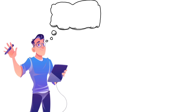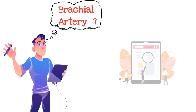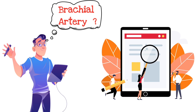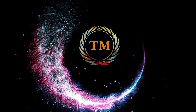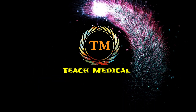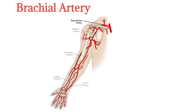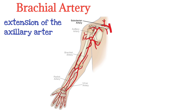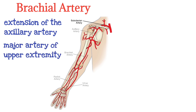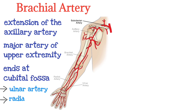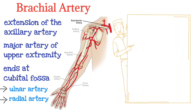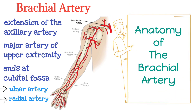Hello learners. Did you know about the brachial artery? The brachial artery is the extension of the axillary artery. It is the major artery of the upper extremity. It ends at the cubital fossa, from where it divides into the ulnar and radial arteries of the forearm. In this article we shall look at the anatomy of the brachial artery.